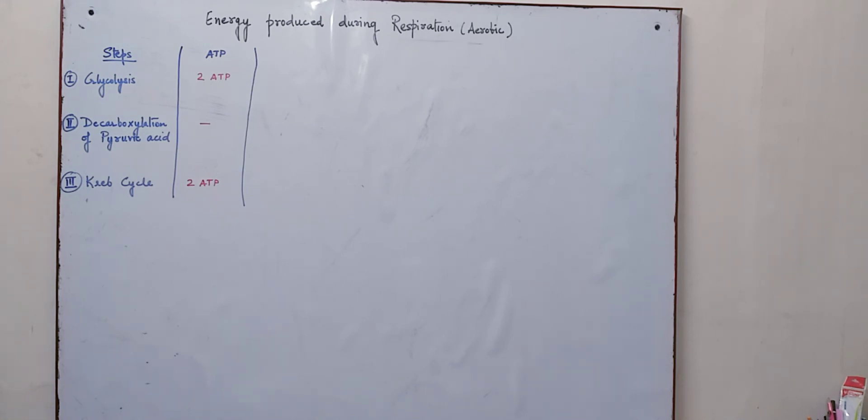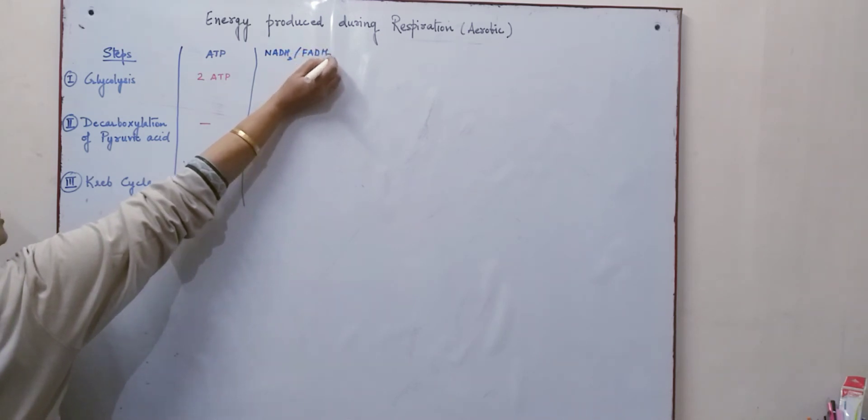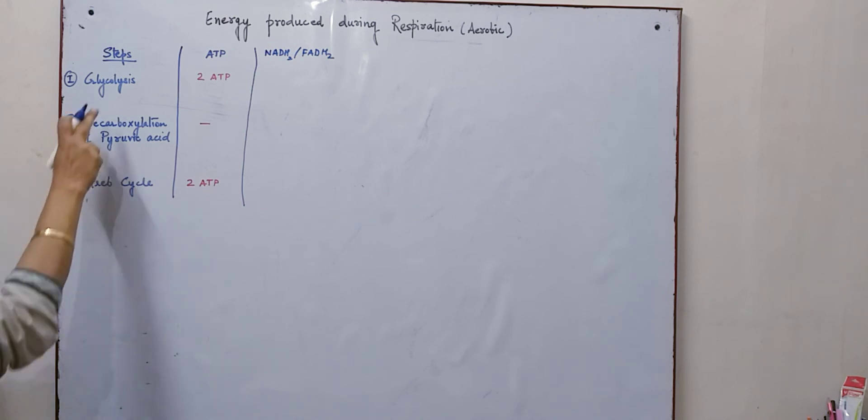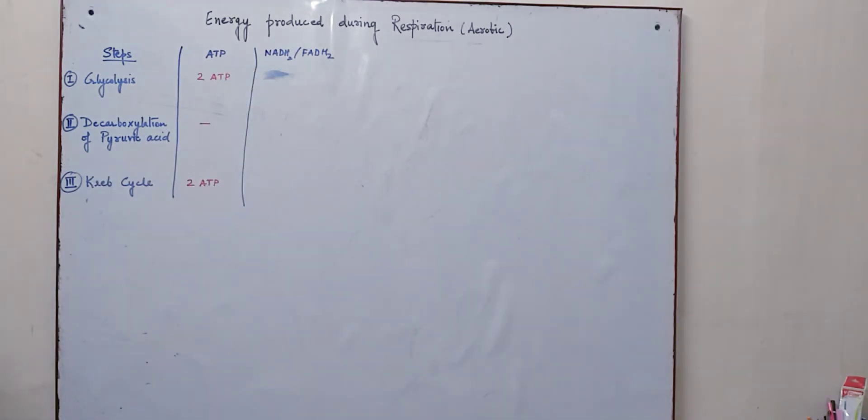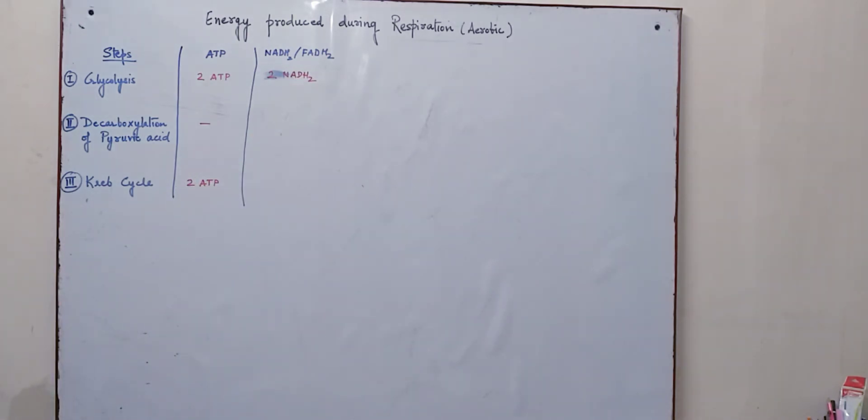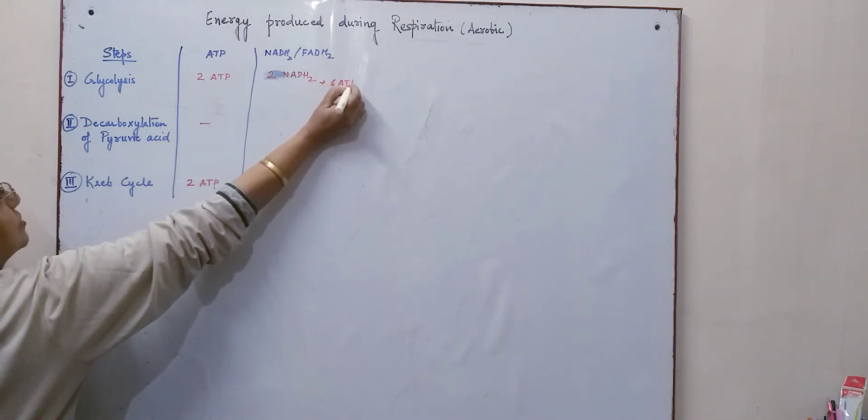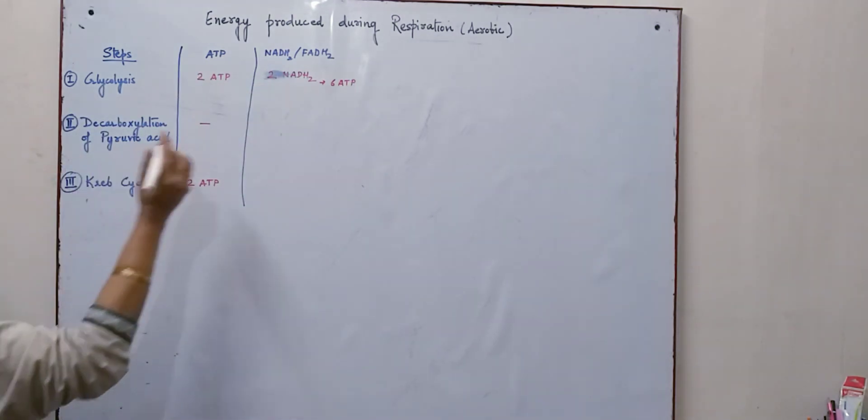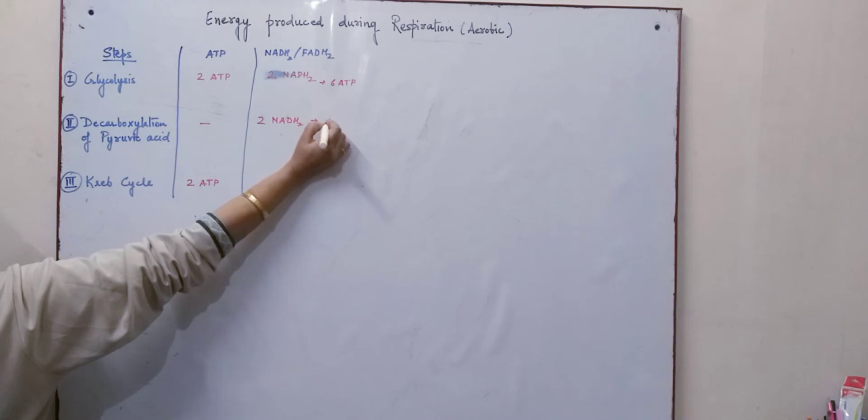Now let us talk about the NADH2 or FADH2 being produced. The NADH2 will be 2 NADH2 over here. 2 NADH2 are produced and we know that 1 NADH2 is equal to 3 ATP. So here it will be 6 ATP produced as a result of the 2 NADH2 production. Here also during decarboxylation there is production of 2 NADH2. So again here we get 6 ATP.